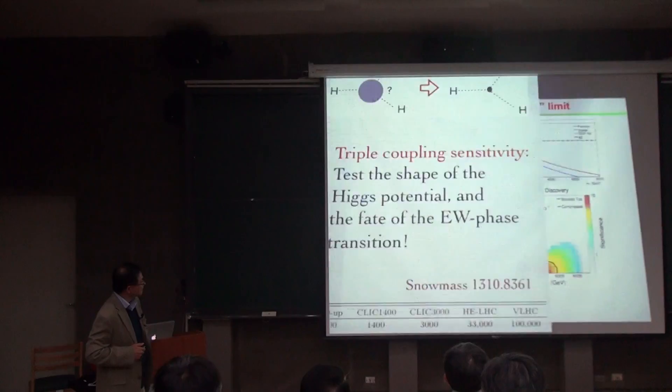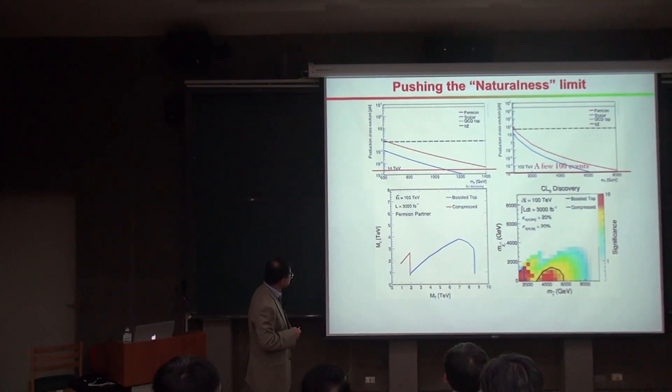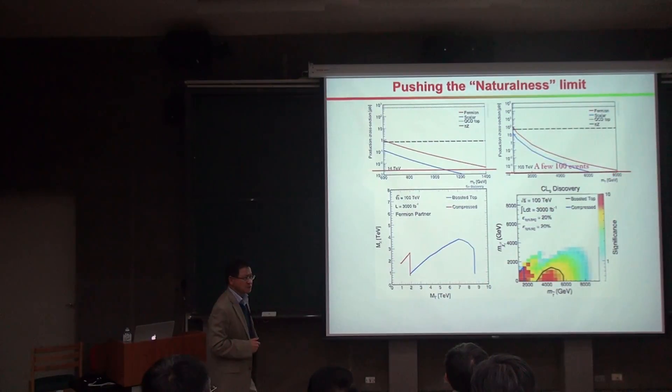So here is the details of how to measure this precision. And then the naturalness, if I also mentioned, 14 TeV to have a few hundred events. But you see that at the future 100 TeV collider, you can just have a few thousand events for the kind of heavy new top partner to keep this natural. You are able to reach 8 TeV.